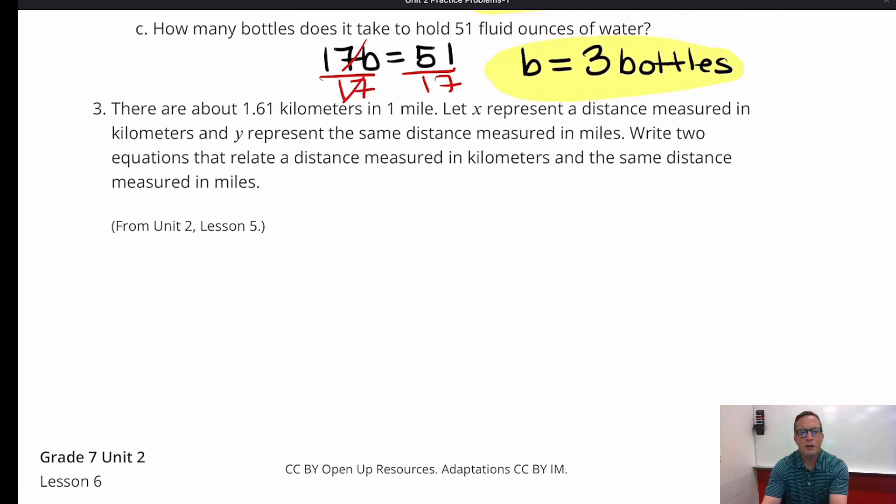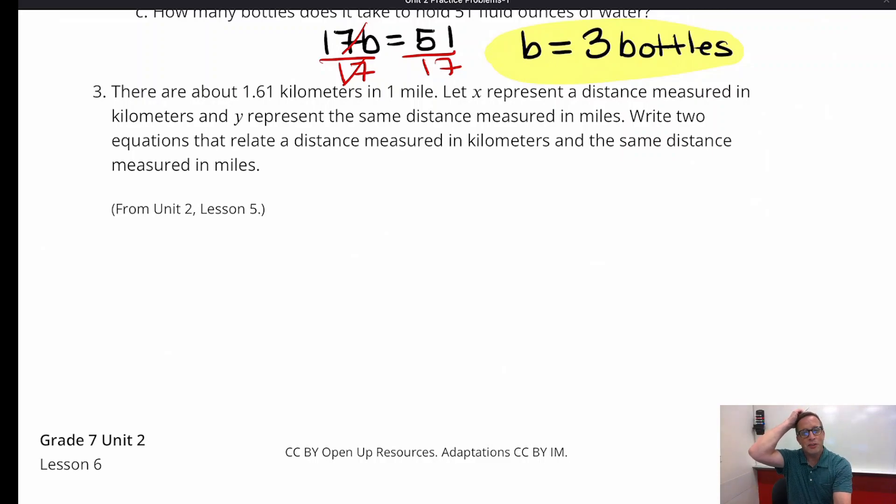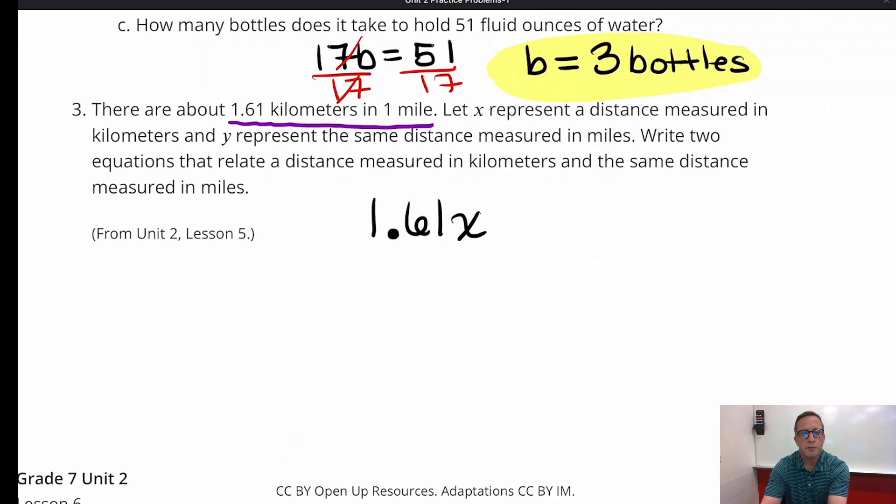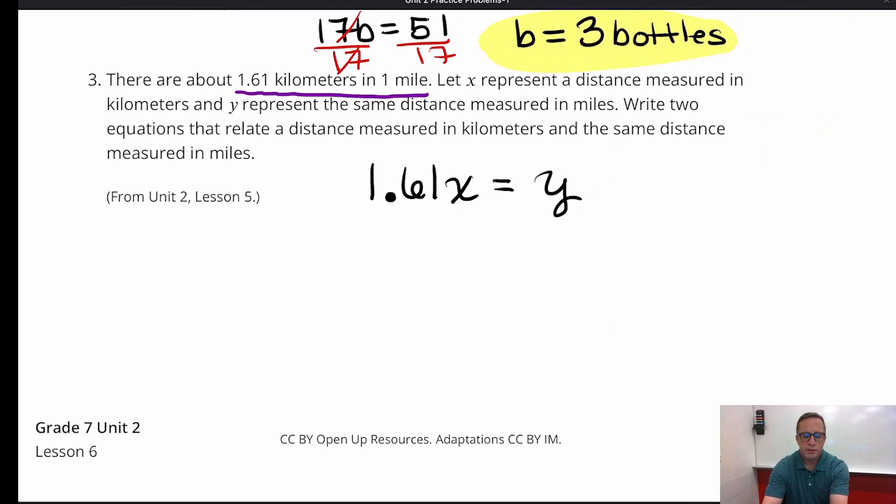Alright, for number 3, it says there are about 1.61 kilometers in one mile. Let X represent a distance measured in kilometers, and Y represent the same distance measured in miles. Write two equations that relate the distance measured in kilometers and the same distance measured in miles. So the most helpful part of this problem is it says there's 1.61 kilometers in a mile. So what we're going to do, it says use X and Y. So we're going to do 1.61 times X. X is going to represent the distance, and we're going to make that equal to Y.